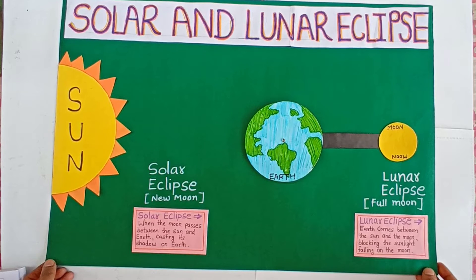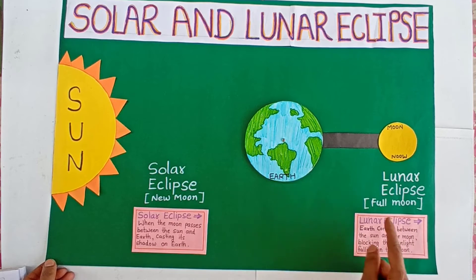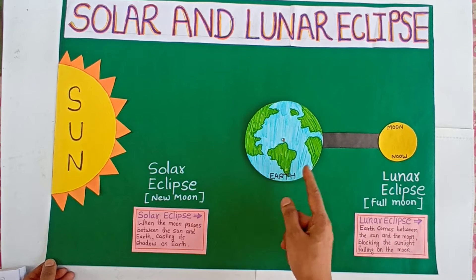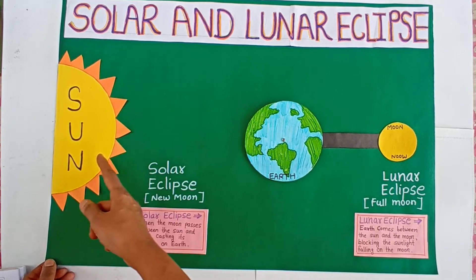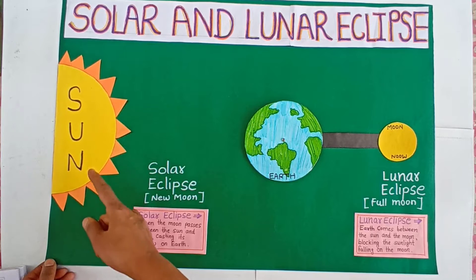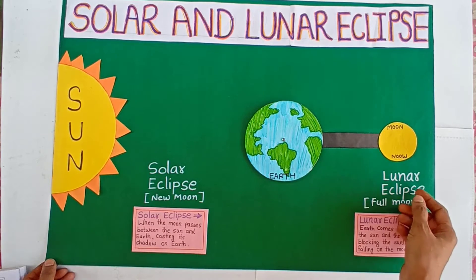During a lunar eclipse, Earth comes between the sun and the moon, blocking the sunlight falling on the moon.